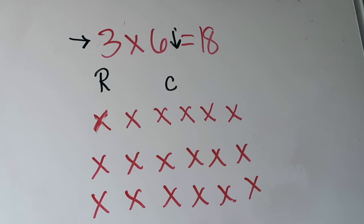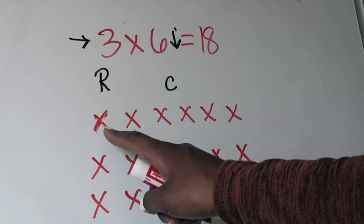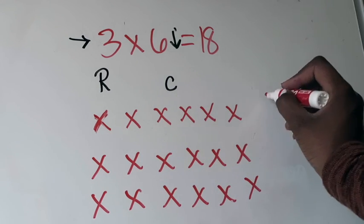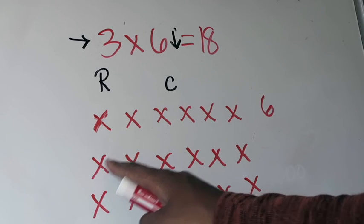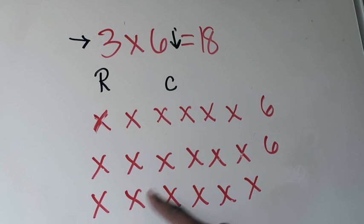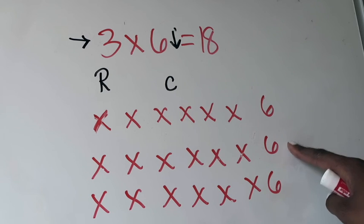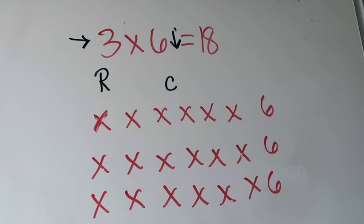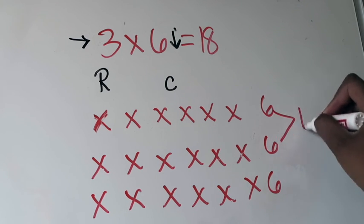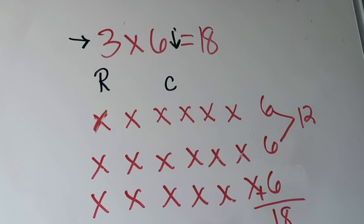I could also remind myself that multiplication is repeated addition. So I know this first row is one, two, three, four, five, six. The second row is also six, and the third row is also six. So I'm adding six plus six plus six — that is repeated addition. I know that six plus six is 12, and six plus another six gives me 18. So this array shows me that the product of three times six is going to be 18.